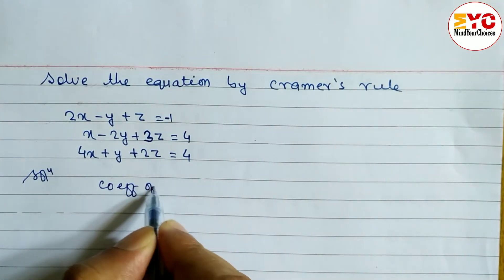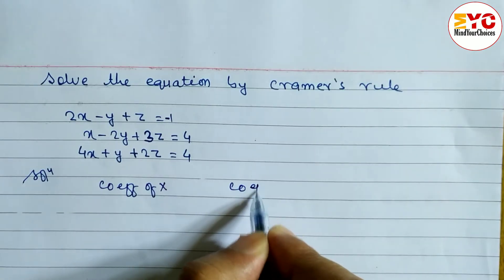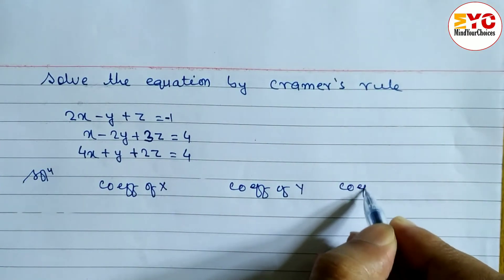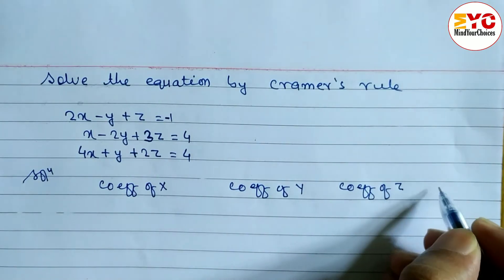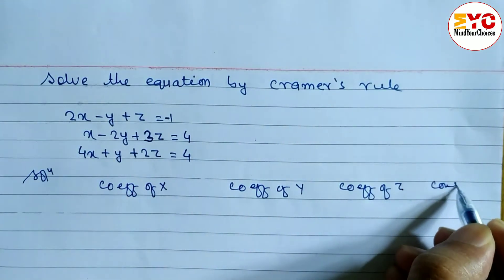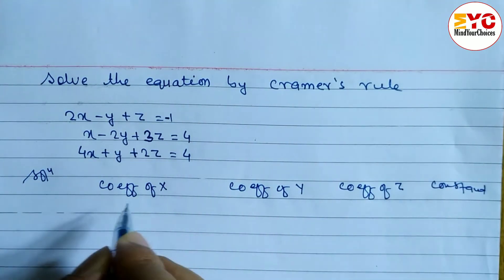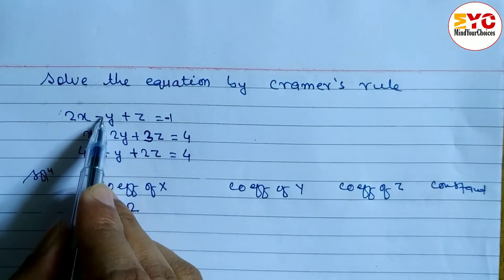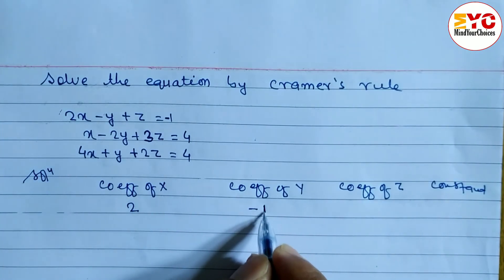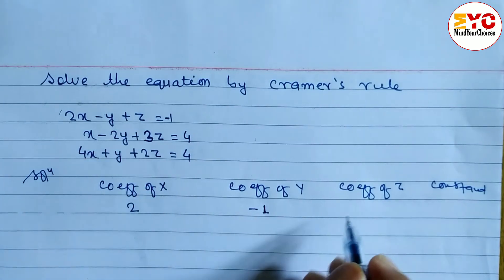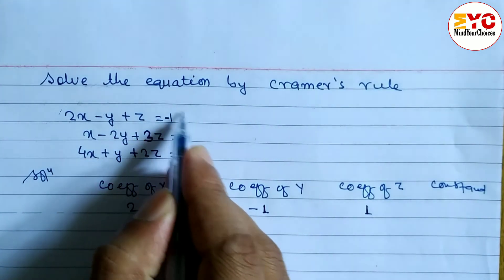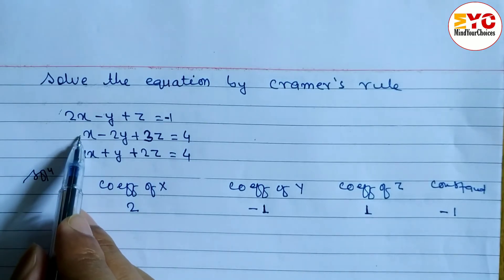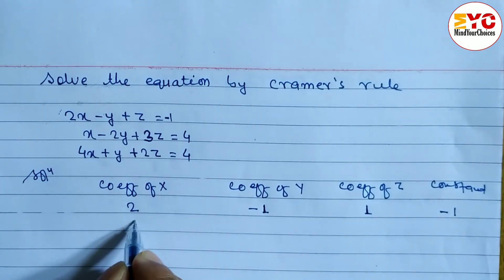First we have to write down the coefficient of X, then the coefficient of Y, then the coefficient of Z, and then the constant. Coefficient of X is 2, coefficient of Y is nothing so we write minus 1 with sign, coefficient of Z is 1, and the constant number is minus 1.